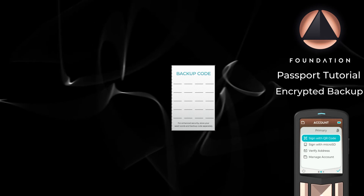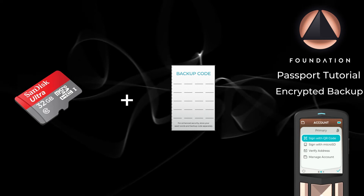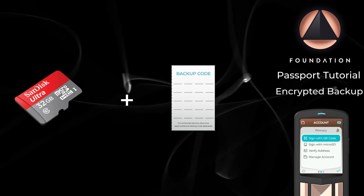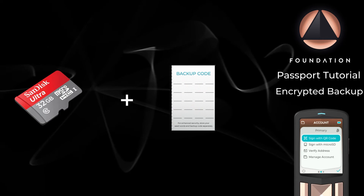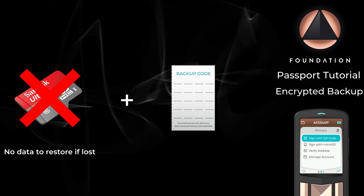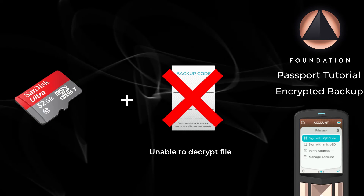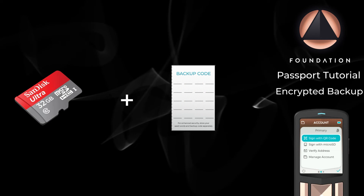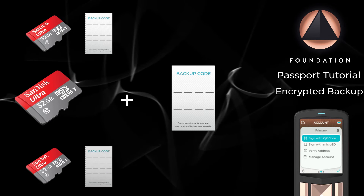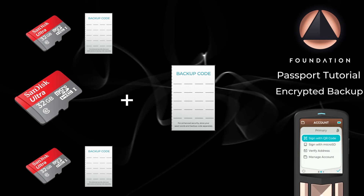Encrypted backups require you to store two things: the 20-digit backup code and the micro SD card containing the encrypted file. If you only have a single copy of these, losing any one of them means you will be unable to recover using this backup method. No micro SD card means you have no data to restore. No backup code means you are unable to access the encrypted file on the SD card. But unlike the plain text seed word backup, making multiple copies of your encrypted backup file and backup code does not multiply your single point of failure, so long as these two items are never stored in the same location.